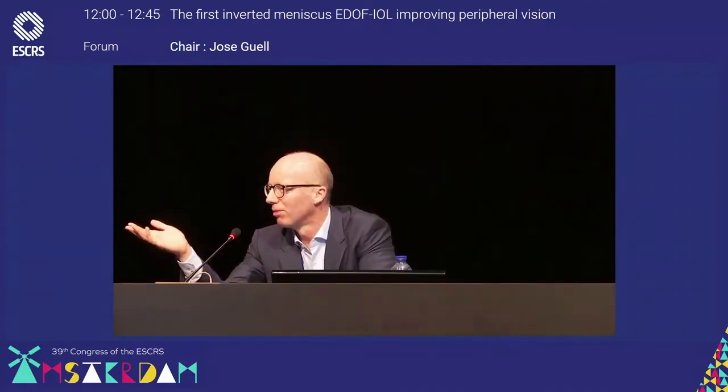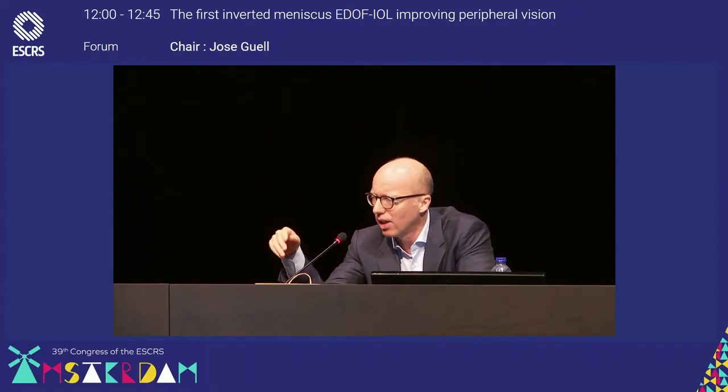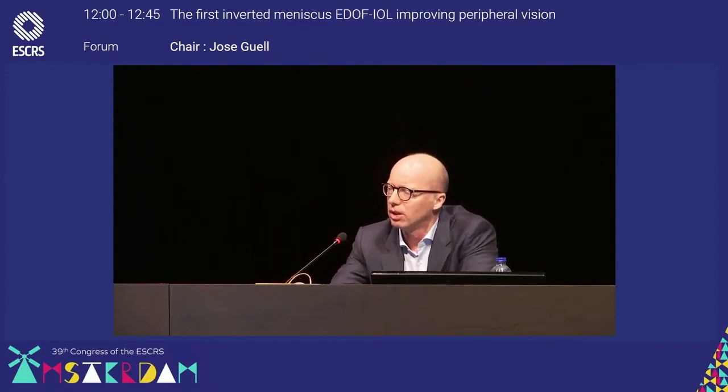Negative photopsia is a real problem. Many patients report it even on the first or second day, but it goes away in most cases. With symptomatic patients, after six, nine, or even twelve months it often resolves or they adapt and are no longer bothered. But there are some where we have to do something — like anterior buttonholing, or putting in a sulcus lens. An additional add-on lens is very cumbersome and troubling. With this lens, from my limited optics knowledge, I would expect less negative dysphotopsia.